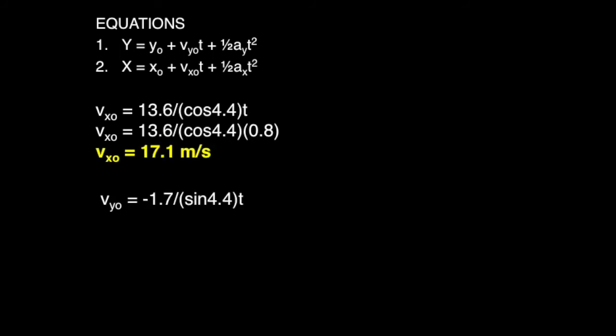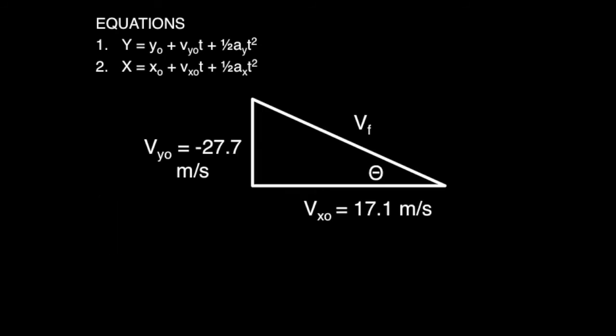Next, we solved for the velocity in the y direction, which is negative 27.7 meters per second. In the triangle, it shows the computed velocity for the x and y direction.